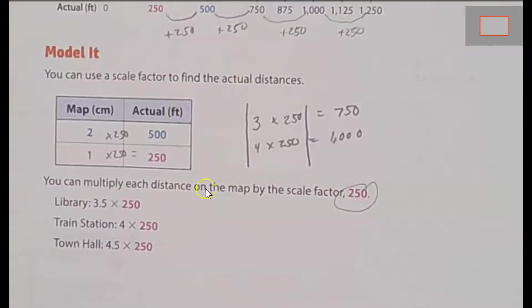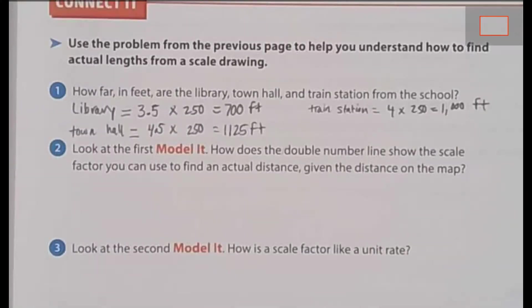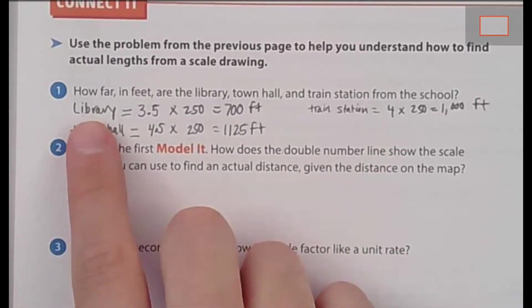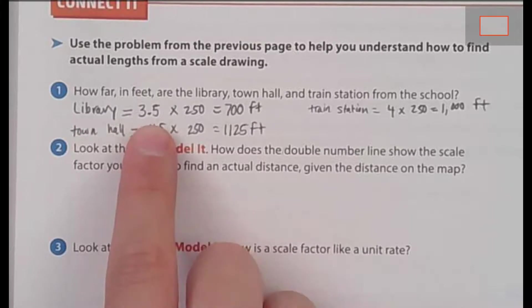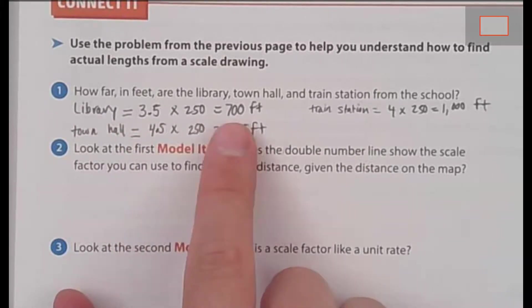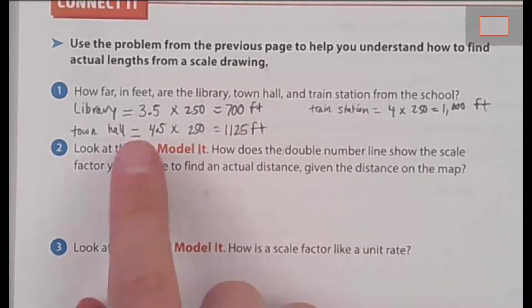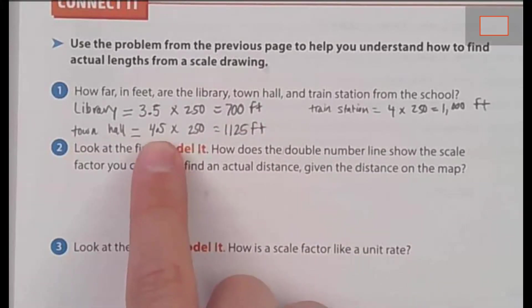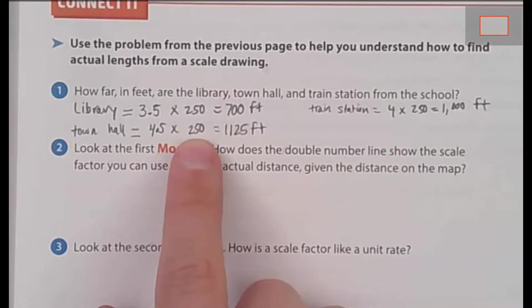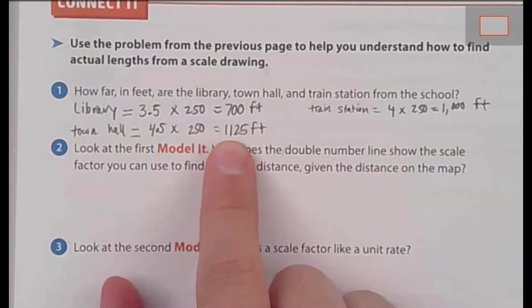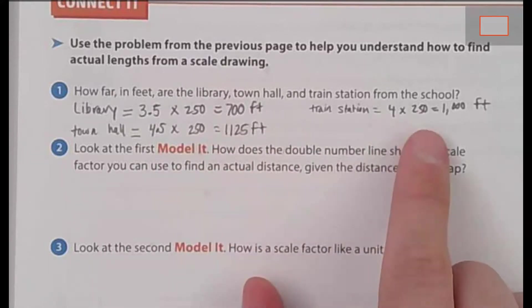Let's move over to page 11. On page 11, you'll see that in order to find out the total distance of the library, the map said it was 3.5 centimeters away from the school. So multiply that by 250, and the actual distance is 700 feet. For the town hall, the map said it was 4.5 centimeters away from school. So multiply by the scale factor of 250, and you get 1,125 feet. The train station said it was 4 centimeters away from the school, so you multiply by 250 and you get the actual distance of 1,000 feet.